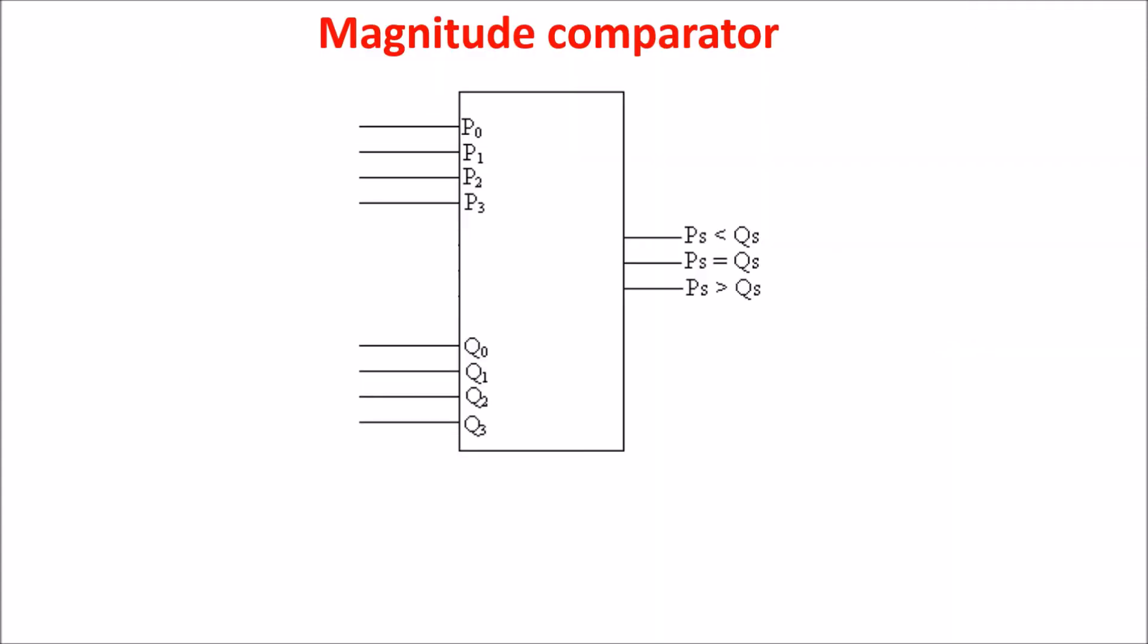We want to compare two binary numbers P and Q and determine which number is greater. So we need two numbers as inputs and three outputs: one for the equality, one if P is greater than, and the other if P is less than Q. So let's start comparing one bit.